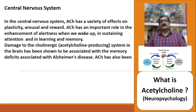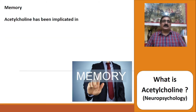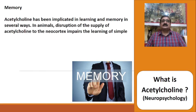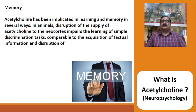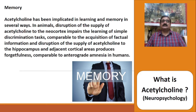Acetylcholine also has a good function in learning and memory. Damage to the cholinergic, or acetylcholine-producing, system in the brain has been shown to be associated with the memory deficits seen in Alzheimer's disease. Acetylcholine has also been shown to promote REM sleep. In animals, disruption of the supply of acetylcholine to the neocortex impairs the learning of simple discrimination tasks comparable to the acquisition of factual information, and disruption of its supply to the hippocampus and adjacent cortical areas produces forgetfulness comparable to anterograde amnesia in humans.